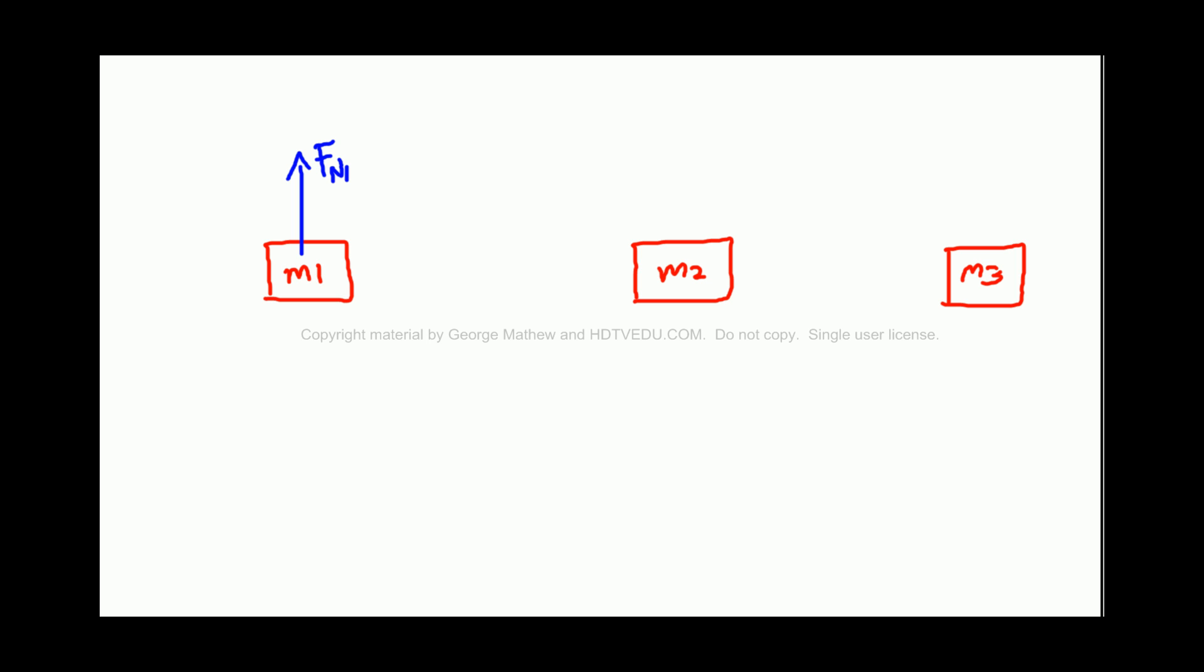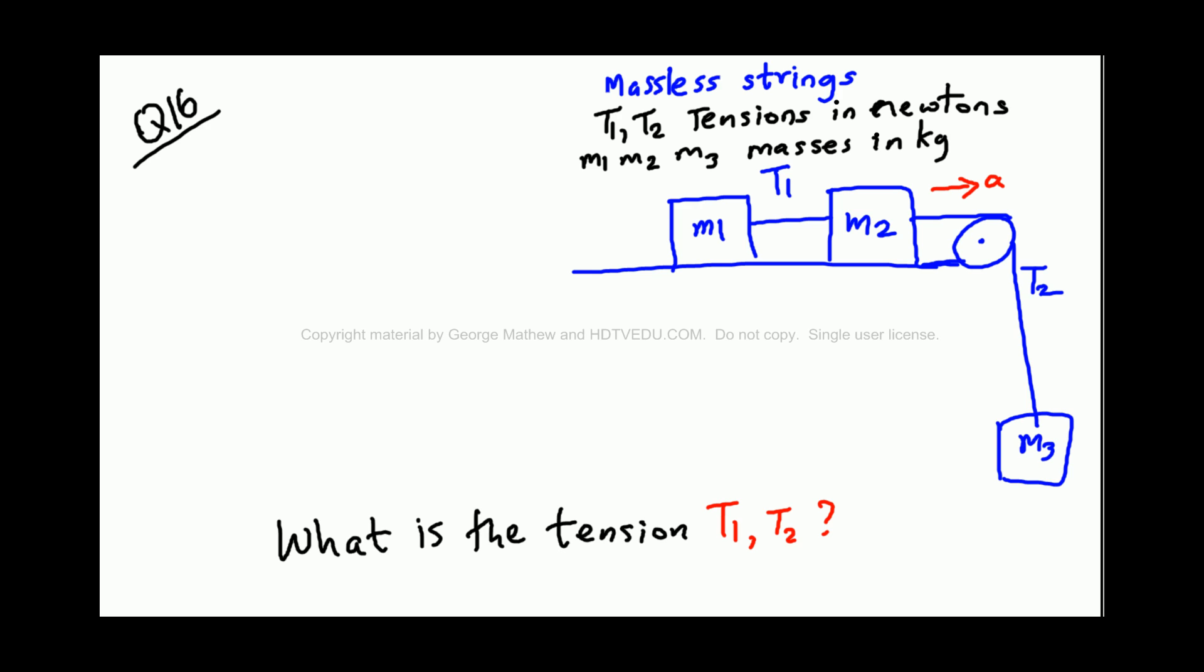I put Fn1, normal force 1. And then we have M1g. Gravitational force will always be there on non-zero mass. And then, if you go back, you see that tension T1.